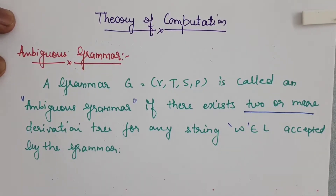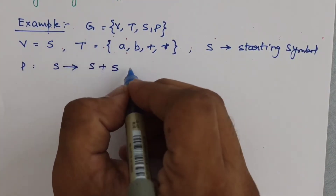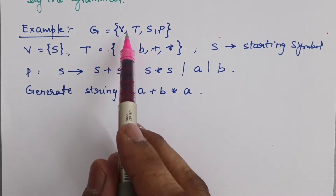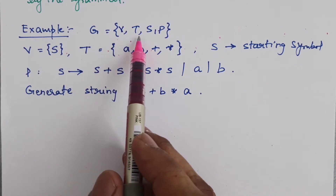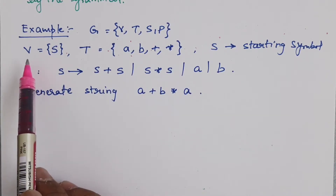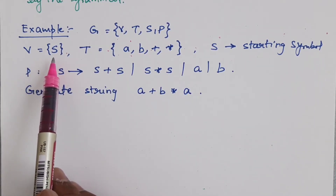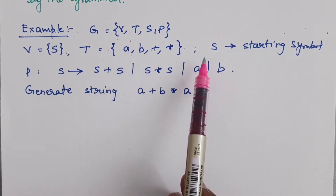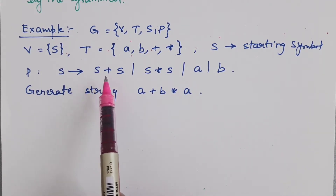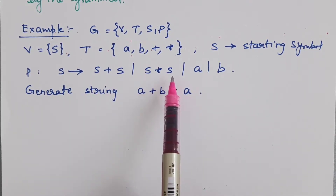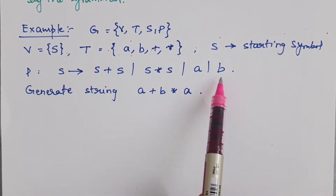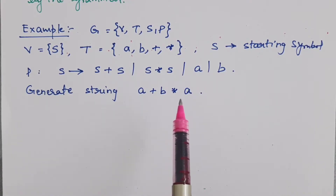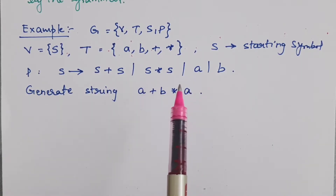Here is an example where there is a grammar G having four components V, T, S, P — that is the set of variables, set of terminals, starting symbol, and production rules. V contains only one non-terminal, which is S. T is equal to {a, b, +, *}, so there are four terminals. S is the starting symbol, and P is the set of production rules: S → S+S, S → S*S, S → a, and S → b. We are trying to generate the string a+b*a.